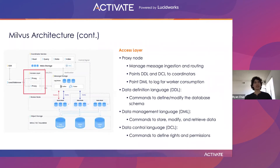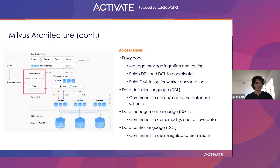Let's get into a few details about the different types of nodes. First off is the access layer. Users interact with the system through proxy nodes, which manage message ingestion and routing. Schema changes and other database metadata updates are sent to the coordinator nodes. All data management messages are put to the log and are consumed by worker nodes, as circled in the red box on the screen.